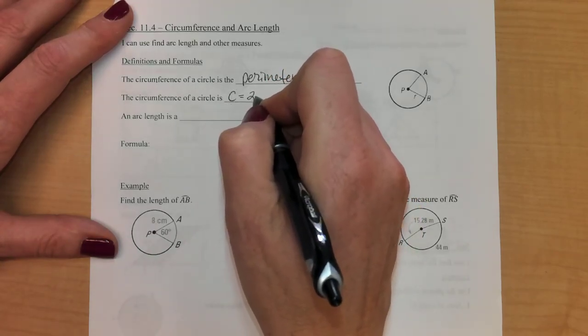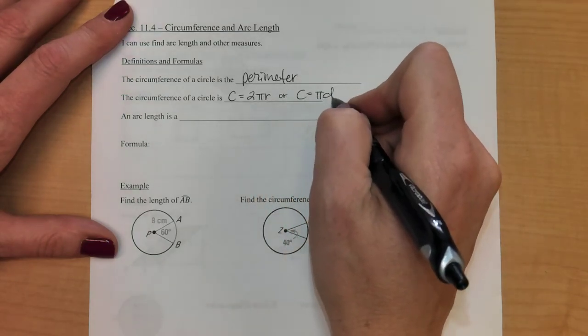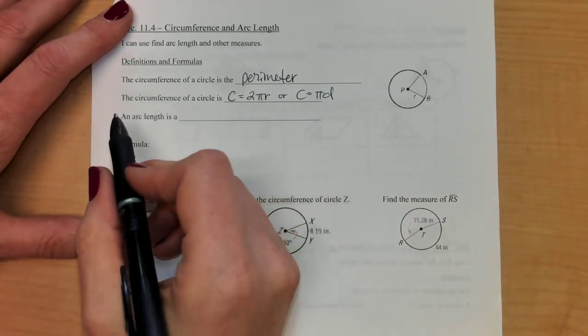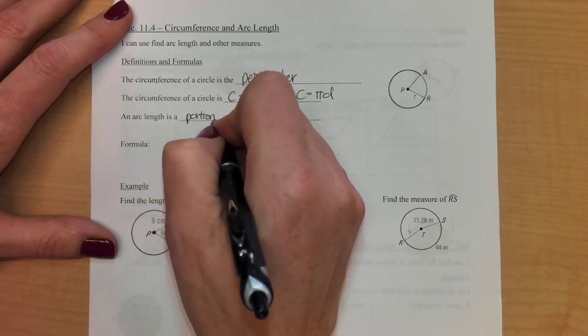The circumference of a circle, we'll use a capital C for that. There are two different formulas: you can either use 2πr or you can use π times diameter. Both of those will get you the same answer. And arc length is a portion of the circumference.